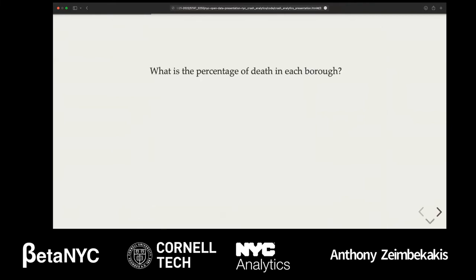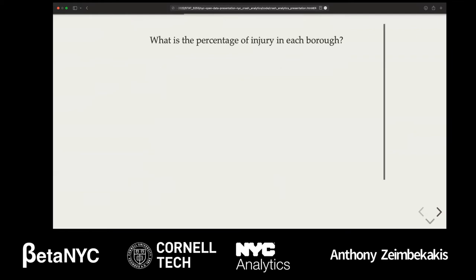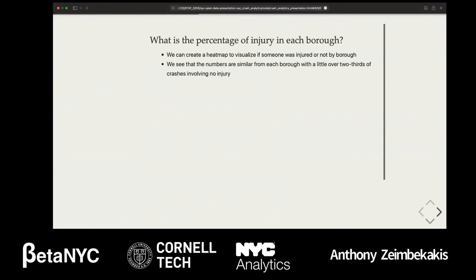The next question: what's the percentage of death in each borough? The numbers are very low in this dataset for 2021. For example, the Bronx only had 19 crashes that involved death. The 0-1 is just a binary indicator, so there could be more deaths in each crash, but only 19 accidents actually caused a death in the Bronx. The numbers are really low in comparison to the total number of crashes for each borough. Another question: what is the percentage of injury in each borough? I'm going to hand this over to Ben.